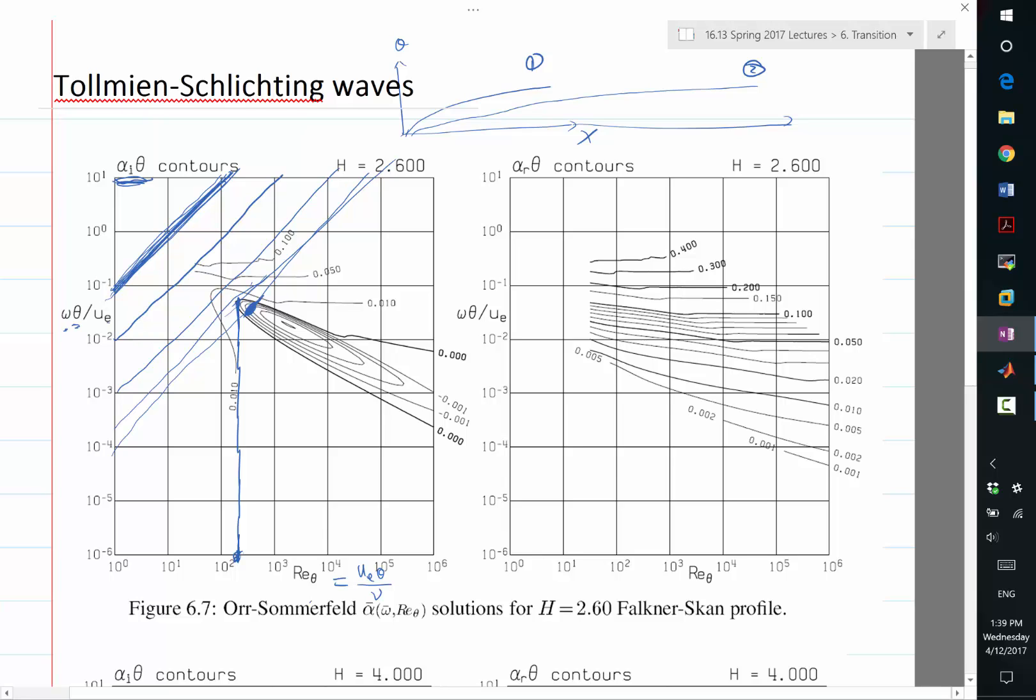So both boundary layers start to support instability waves when Re theta reaches a certain level. Let's write Re theta and Rex. So both are non-dimensionalized. So both boundary layers start of growth at exactly the same Re theta. So this one supports it at here, this one supports it at here.